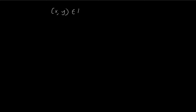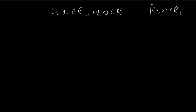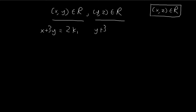To begin our proof, we first start with our given facts. We know that x, y is an element of R, and y, z is an element of R. What we want to do is start from these given facts and arrive at the conclusion that x, z must also be an element of R. Since x, y is an element of R, that means x plus 3y is even, so this is equal to 2 times some integer, let's call it k1. And also y plus 3z is also equal to 2 times some integer, let's call it k2.